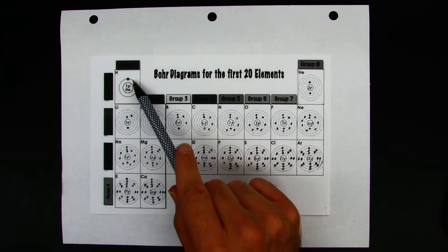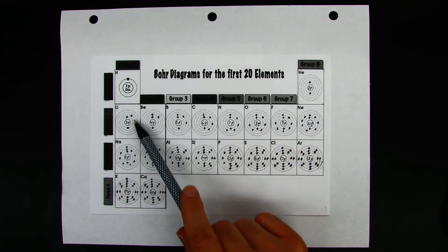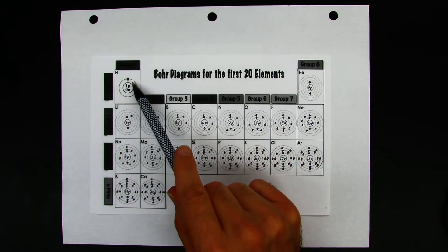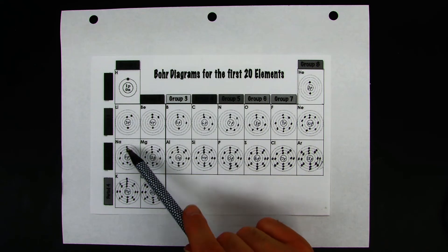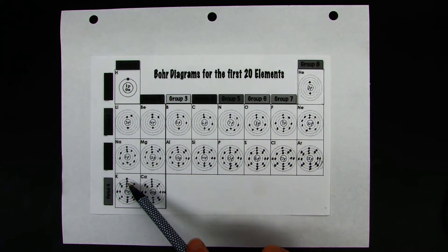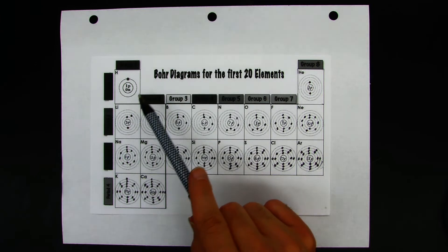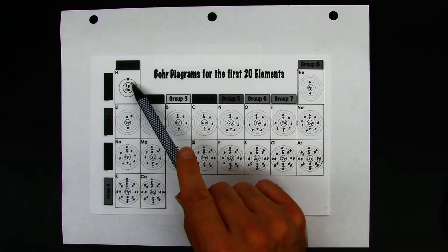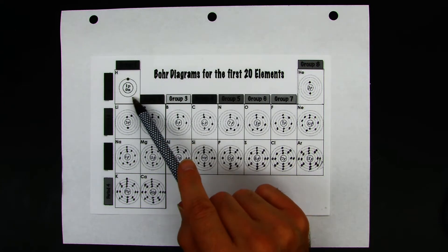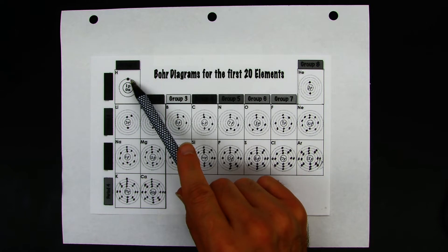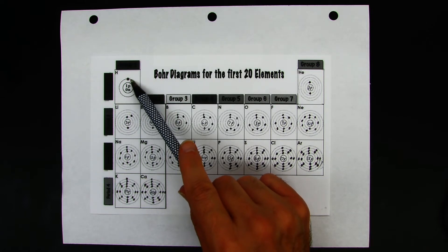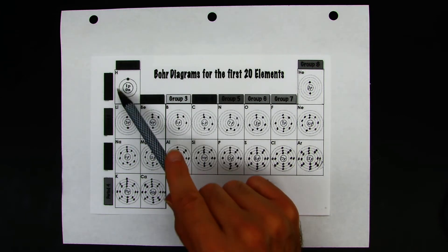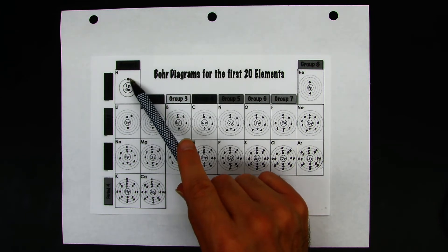If you're looking at the group one elements, what do you notice that's common for each of them? So you have group one: here you have hydrogen, lithium, sodium, and potassium. What you should notice is that each atom's Bohr model shows that the outermost energy level that has electrons in it only has one electron. For hydrogen, the outermost shell is the first one — it only has one electron.